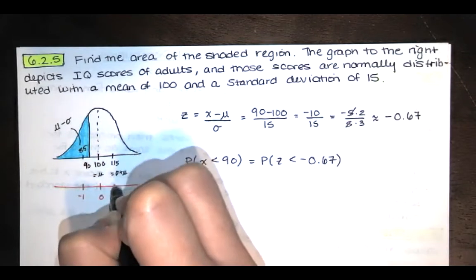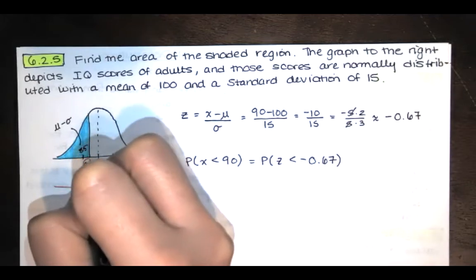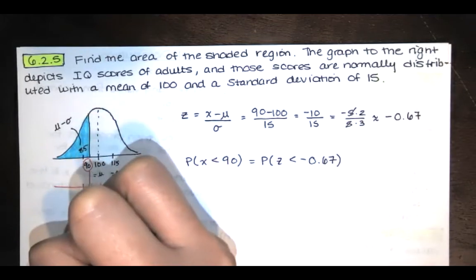So this is the mean on our non-standard normal distribution. The corresponding mean on the standard normal distribution would be zero. This is one standard deviation below the mean. This is one standard deviation above the mean. And our 90, that 90 right here corresponds to z equals negative or z is approximately equal to negative 0.67.